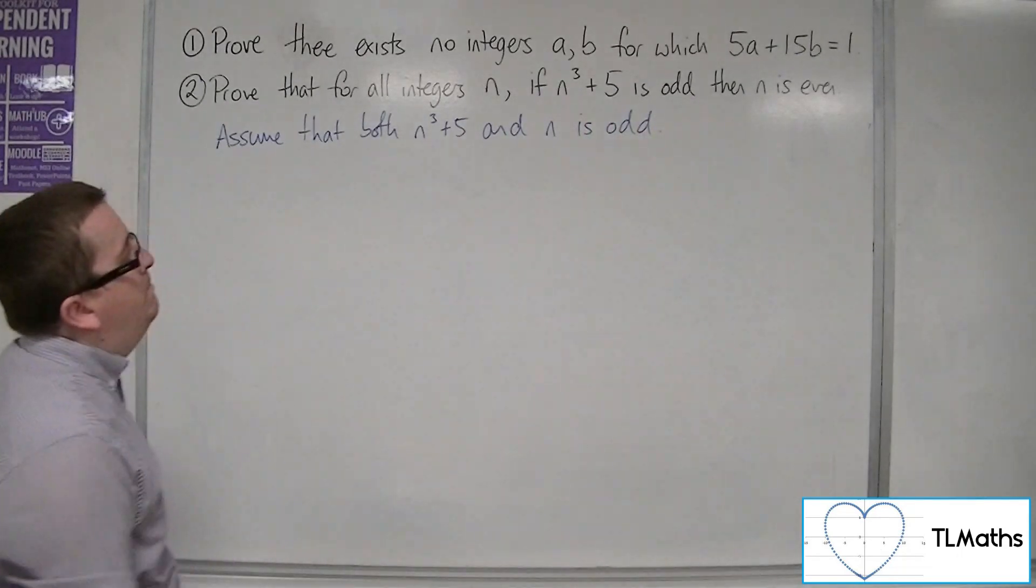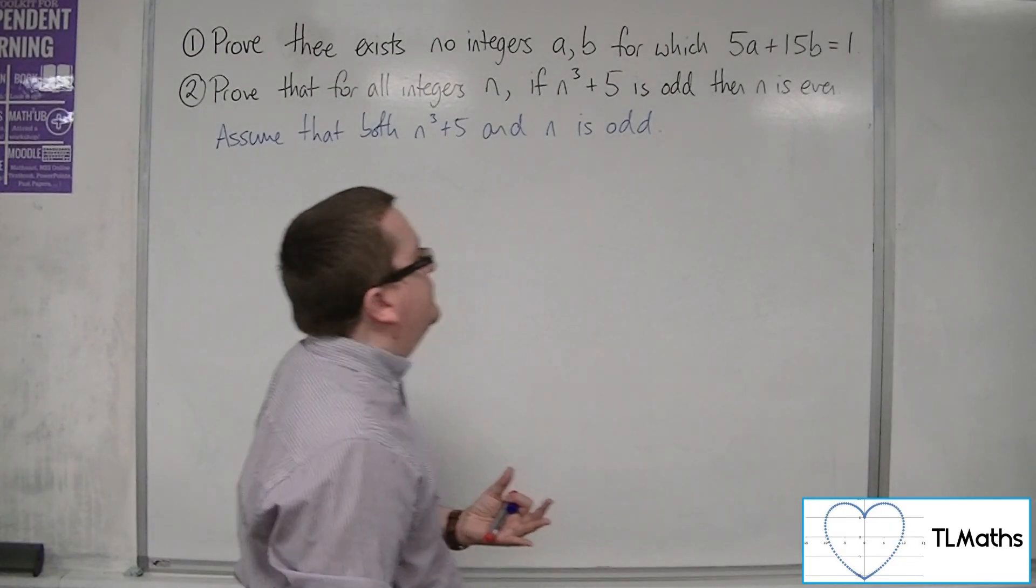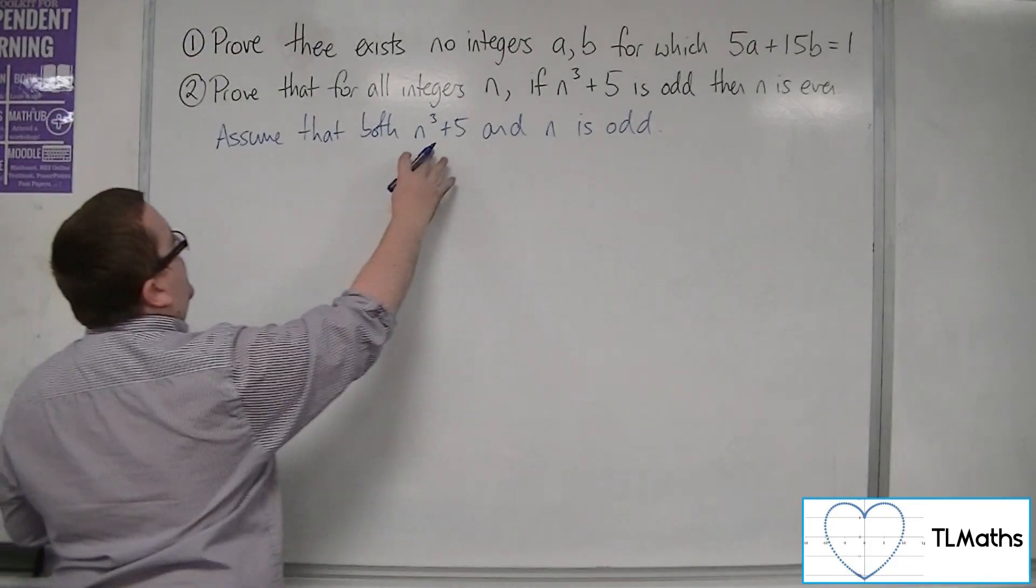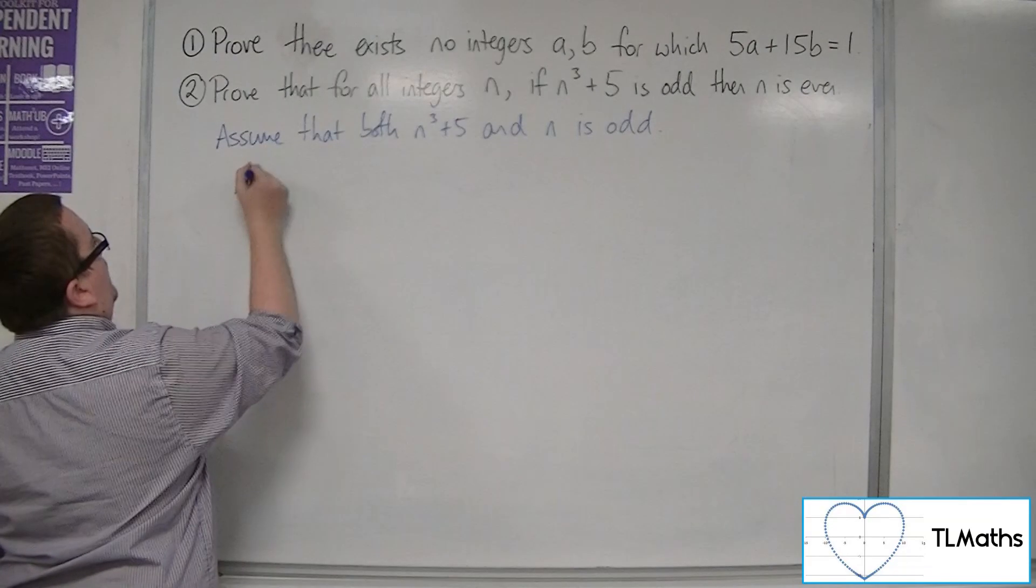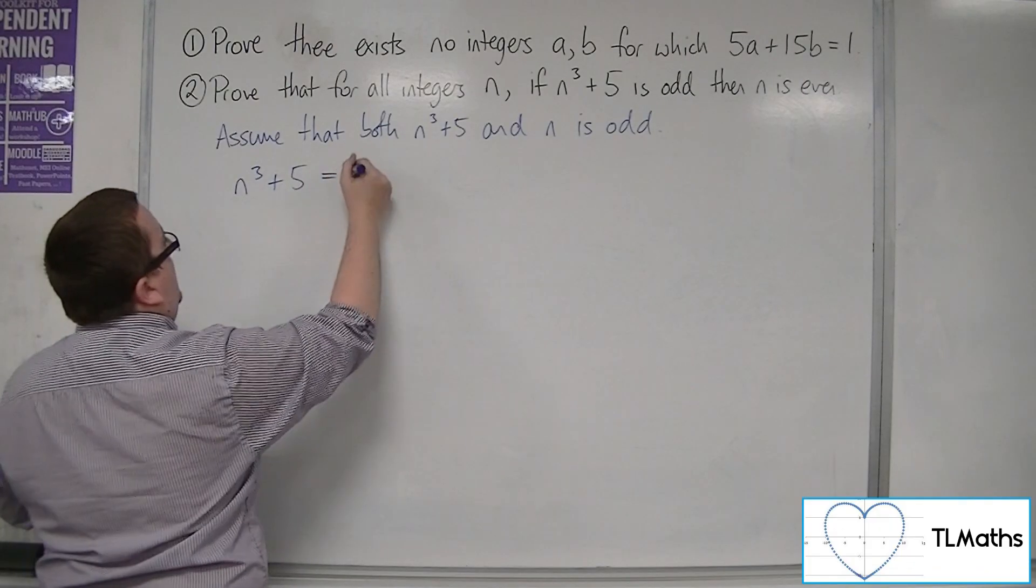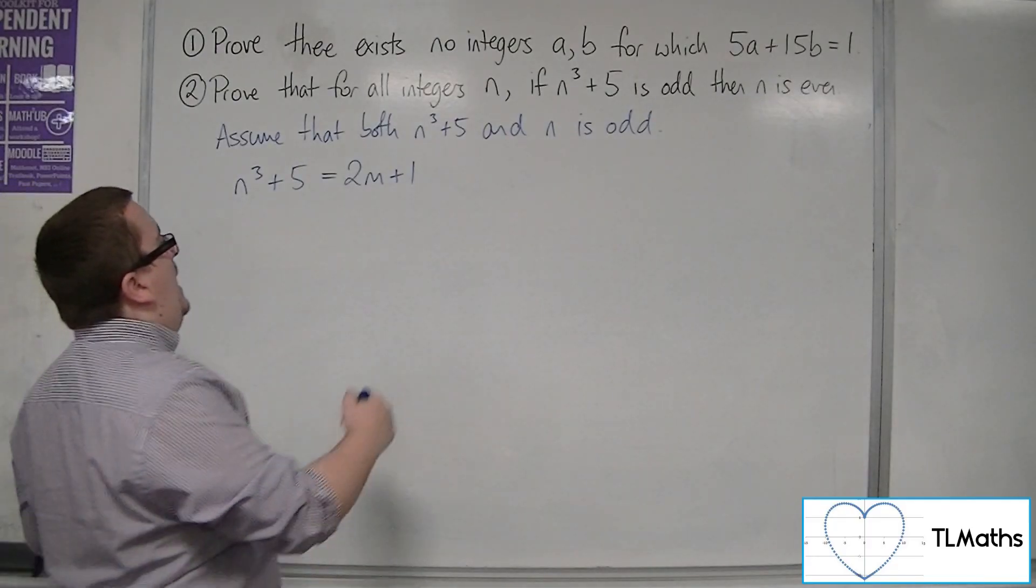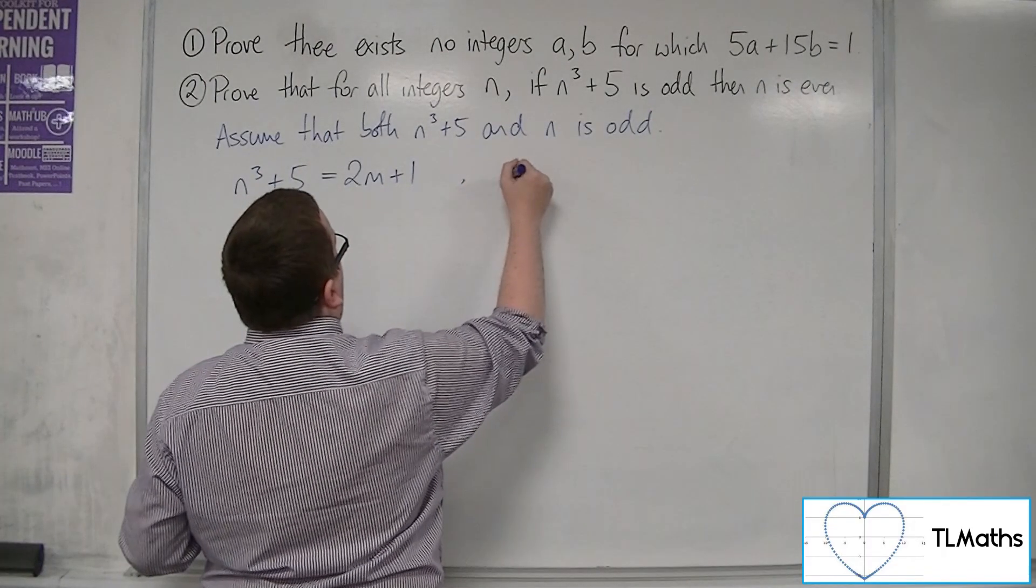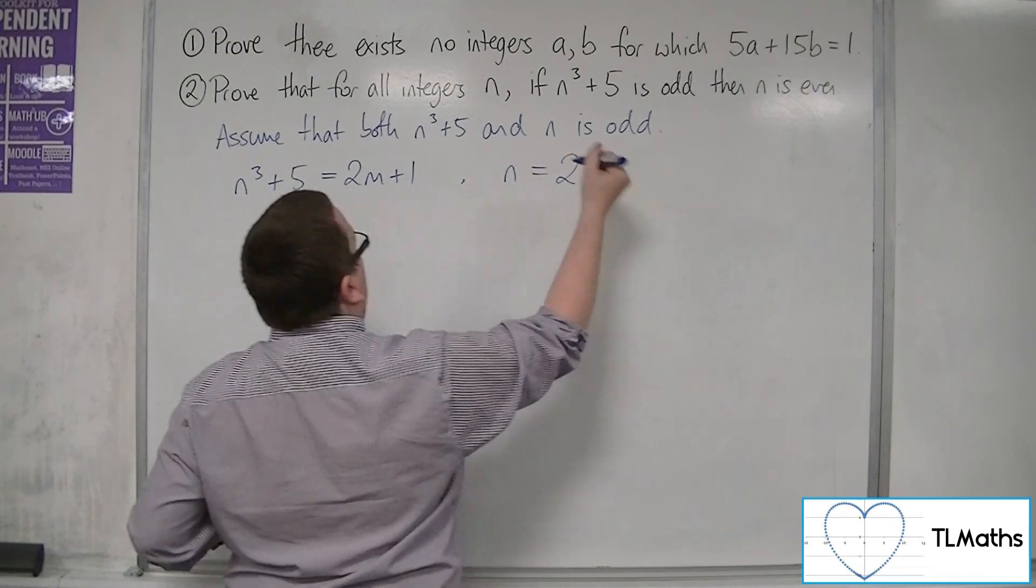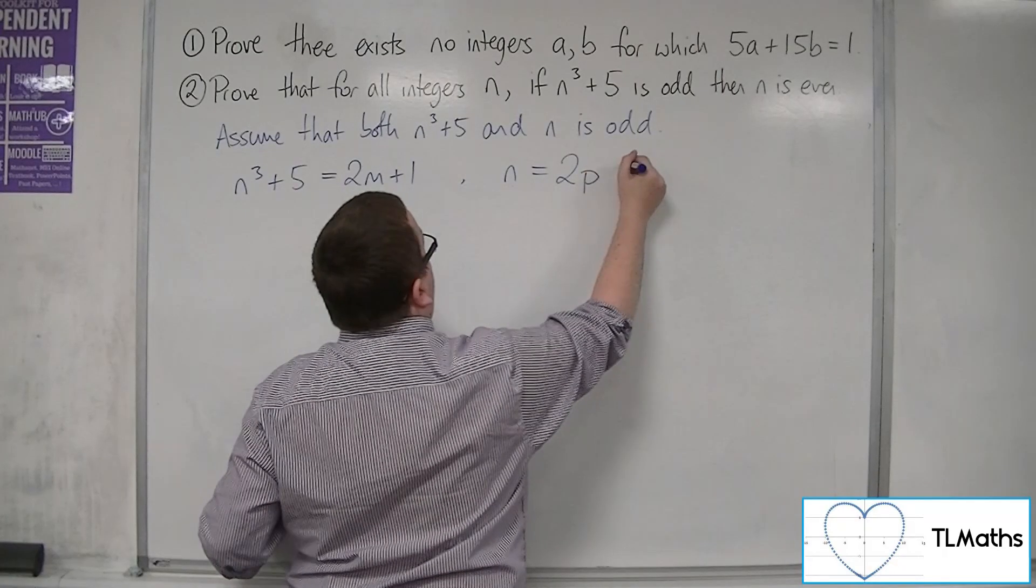Now what would that mean? Well, that would mean that we could write n cubed plus 5 as some odd number. Let's say 2m plus 1. And we could also say that because n is odd, we could write n as 2 times some other number, let's say p plus 1.